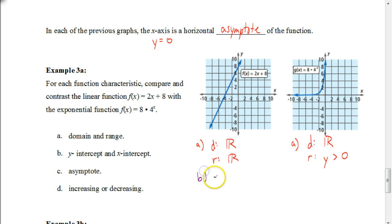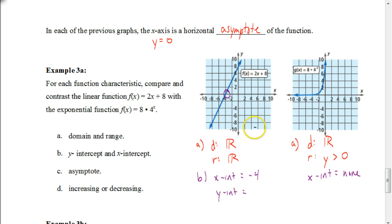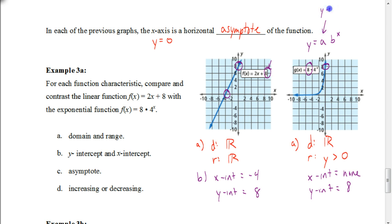Now let's look at the intercepts. The X intercept for the linear equation is at negative 4. The X intercept for the exponential function — be careful — there is none; it doesn't cross the X axis. The Y intercept for the linear equation: it's in slope-intercept form, so you can see the Y intercept is 8. For the exponential function, the Y intercept is also 8. And where do we get that from our equation? It's our value for A. The A value in Y equals A times B to the X power identifies your Y intercept.